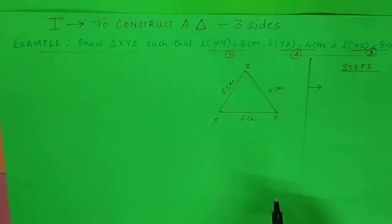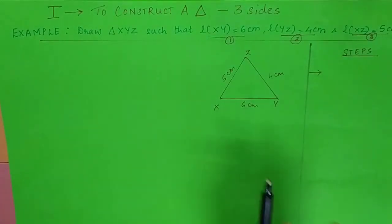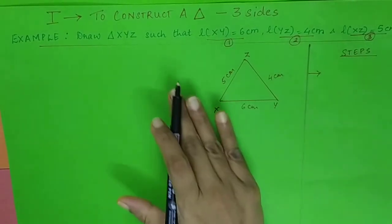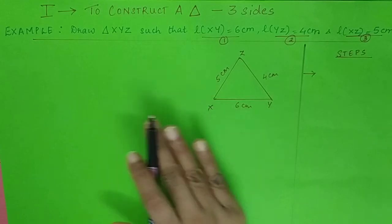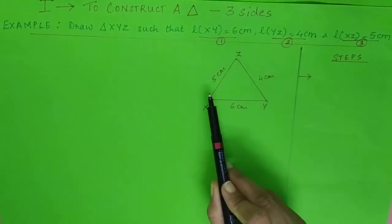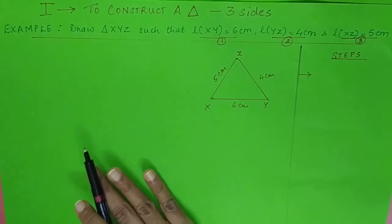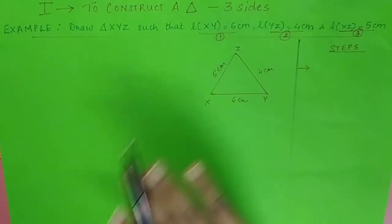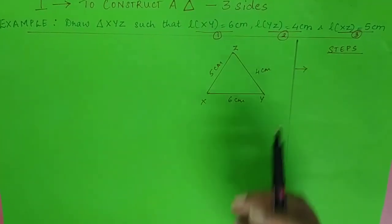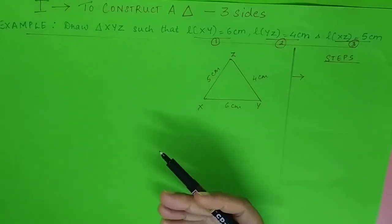So as you notice, your first step was to draw the rough figure. Now, once a rough figure has been drawn, I have labeled the rough figure as well as written the lengths. It is very easy for me to draw a fair diagram exactly the same as the rough one.